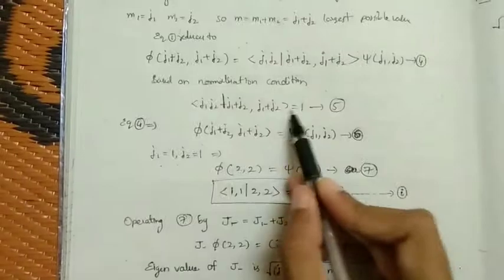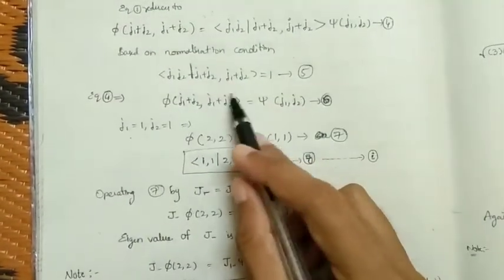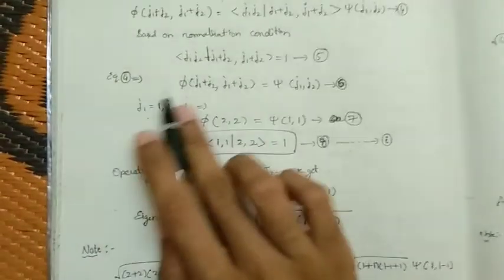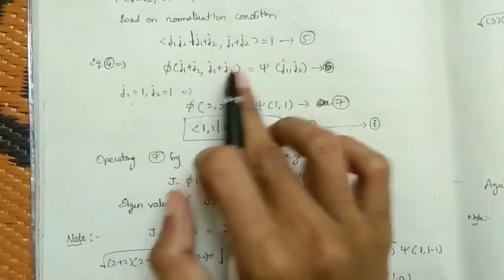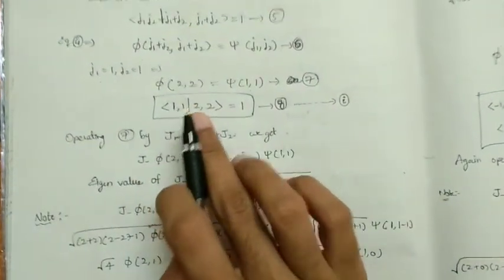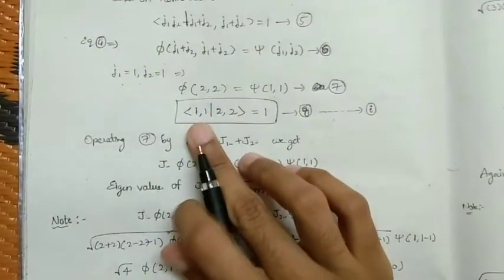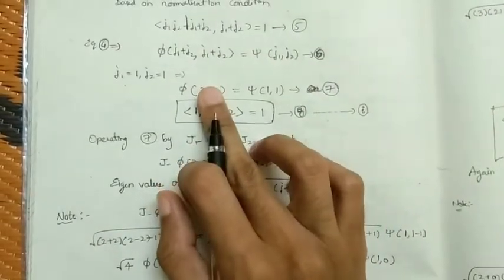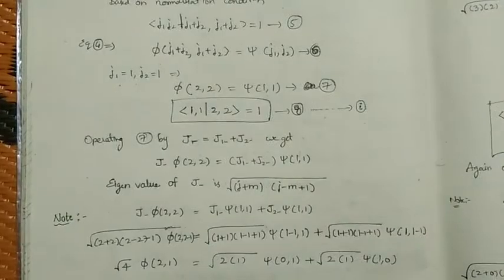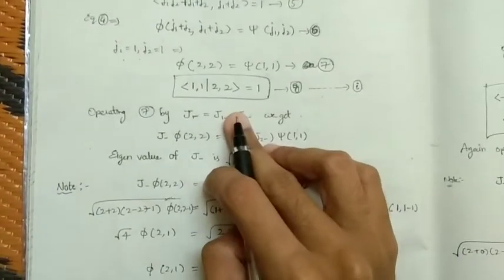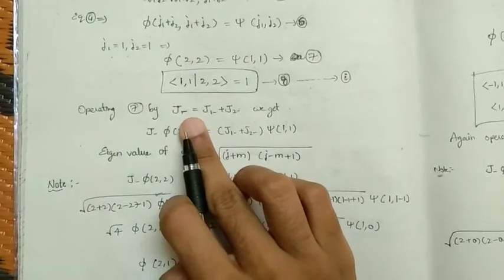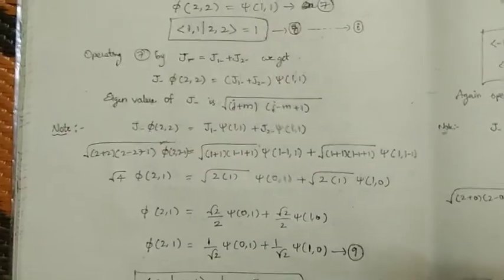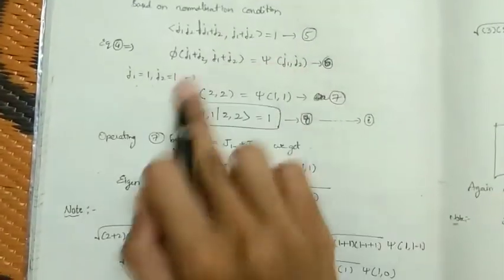The remaining steps are as discussed in the previous videos. We substitute j1=1 and j2=1 to get j1+j2=2, so the first state is psi(2,2) expressed in terms of psi(1,1) — that is the first Clebsch-Gordan coefficient. To get the next coefficient, we apply the j-minus operator on both sides.